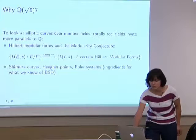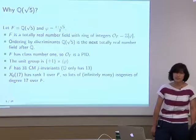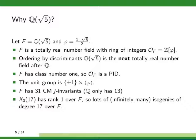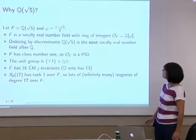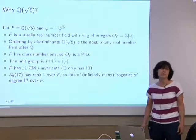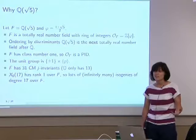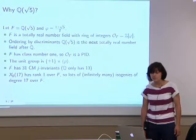We have modularity conjectures and BSD conjectures for curves over totally real number fields. More specifically, why Q(√5)? If you order by the discriminant, it's the first totally real number field that comes after Q. We'll let φ = (1 + √5)/2 to fix a generator, and the ring of integers is Z[φ]. The ring of integers in this field has class number 1, which computationally makes it much easier to work with.